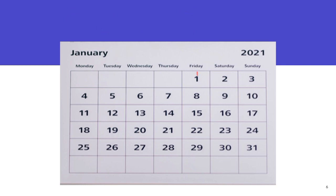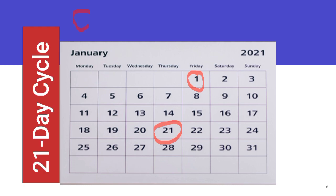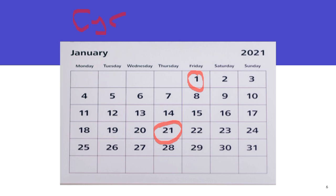If she starts on the 1st of January and starts another menstruation on the 21st of January, the length of the cycle is 21 days.